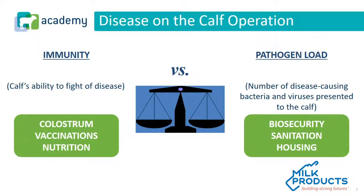On the pathogen load side, we're talking about biosecurity — making sure that we keep those types of diseases that come on the farm from other people or other animals away from an outside source. Housing from a pathogen load standpoint is always very important — that's where the animal lives. And then overall sanitation techniques. We'll spend a lot of time in this presentation talking about things related to sanitation.